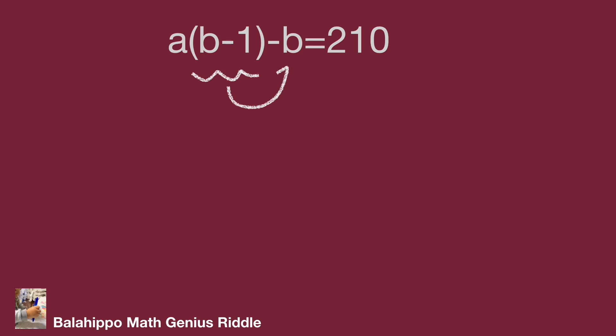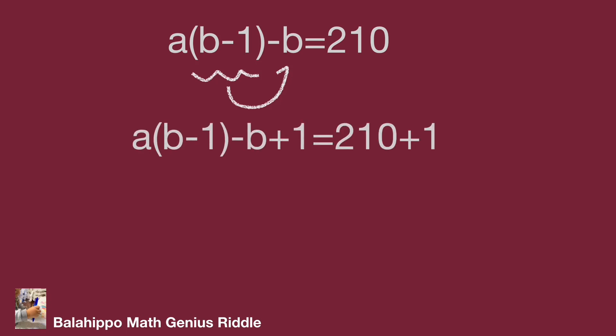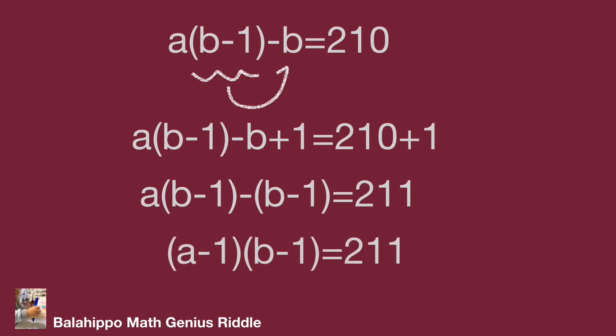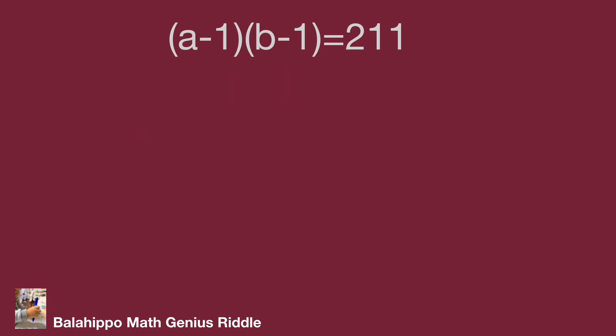We are going to generate a (b − 1) factor on the left side of the equation. Therefore, add 1 to both sides. This generates the (b − 1) factor, giving us a × (b − 1) − (b − 1) = 211. Adjusting it becomes (a − 1) × (b − 1) = 211. This is the key equation to solve the problem.